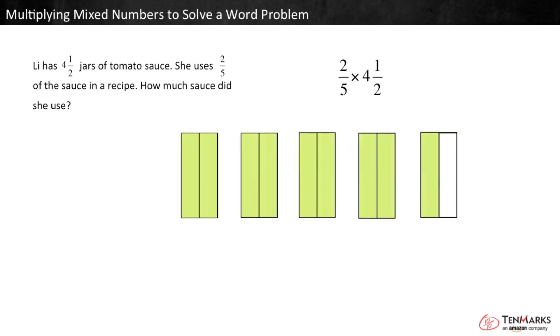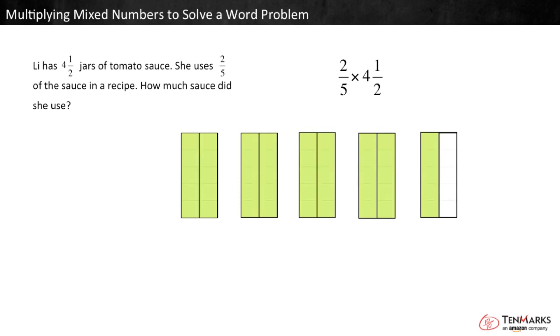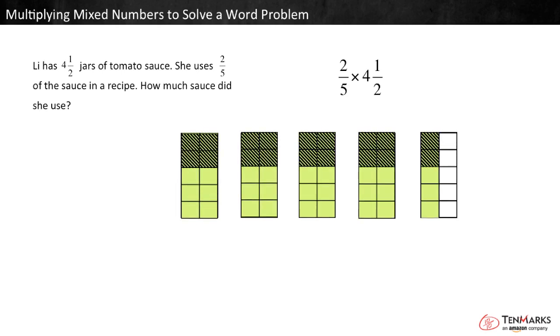To find two-fifths of four and a half, we need to cut each whole again, this time into fifths. In a new color, shade two-fifths of each half.